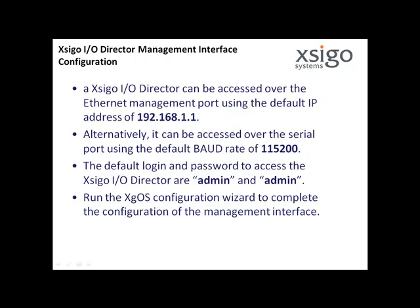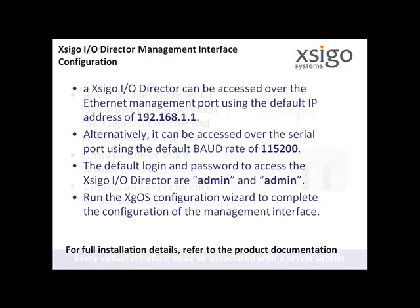SEGO IO Director Management Interface Configuration. The SEGO IO Director can be accessed over the Ethernet management port using the default IP address of 192.168.1.1. Alternatively, it can be accessed over the serial port using the default baud rate of 115,200. The default login and password to access the SEGO IO Director are admin and admin, respectively. You will run the SEGO OS Configuration Wizard to complete the configuration of the management interface.